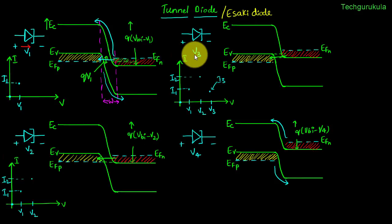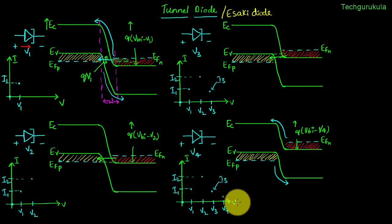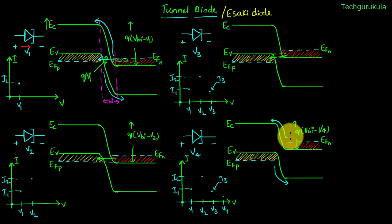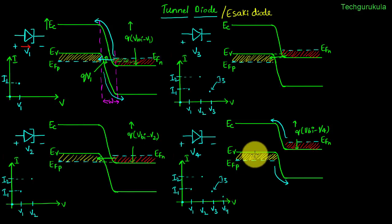This situation looks very similar to a normal conventional PN junction diode where carriers are injected across the depletion region and they diffuse, recombine, and so on. So at V4 the current would be very small, but if we start increasing the voltage beyond V4 there would be injection of electrons from n-side to p-side and holes from p-side to n-side, and the tunnel diode would behave like a normal PN junction diode with current increasing exponentially.